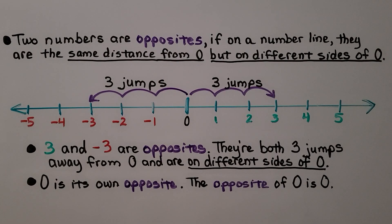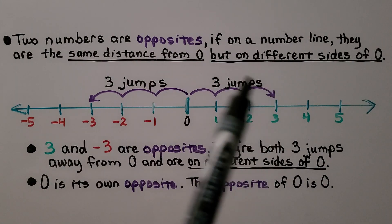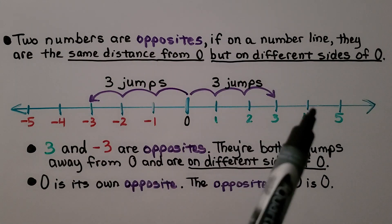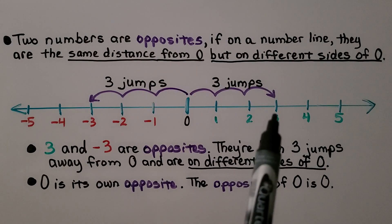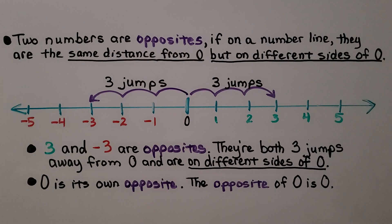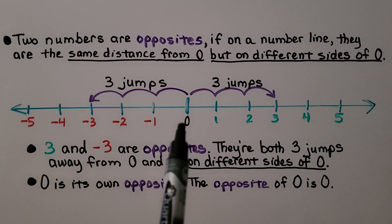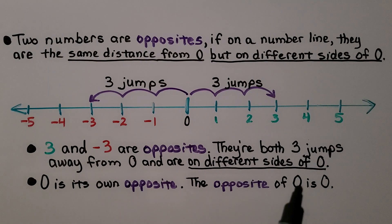Two numbers are opposites if, on a number line, they are the same distance from zero but on different sides of zero. Three and negative three are opposites — they're both three jumps away from zero and on different sides. And zero is its own opposite: the opposite of zero is zero.